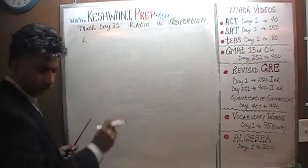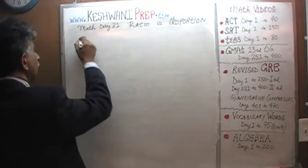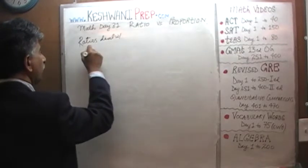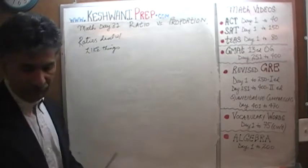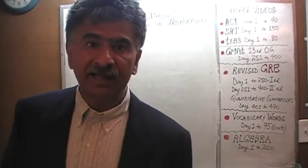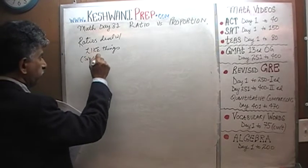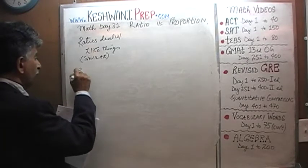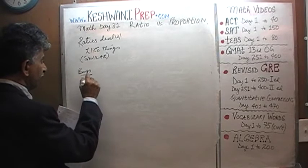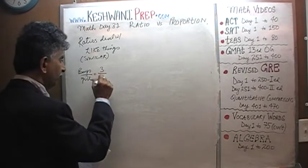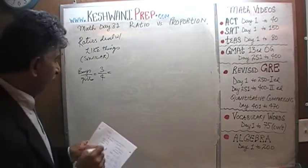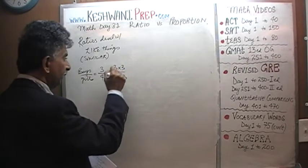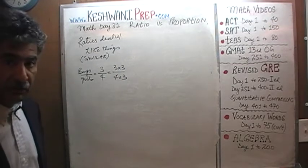Ratios deal with like things — like, as in similar things. For example, in a ratio we might talk about the ratio of boys to girls in the class. If we are told that the ratio of boys to girls is 3 to 4, and if the problem tells us that there are 12 girls in the class, then the boys would be 3 times as much — there would be 9 boys. Ratios deal with like things.